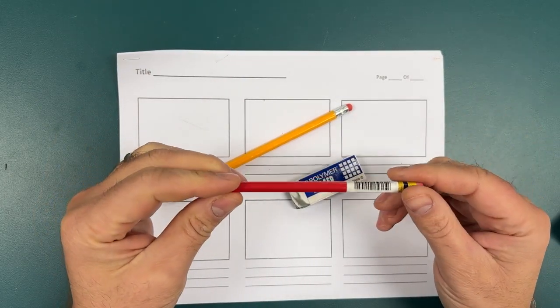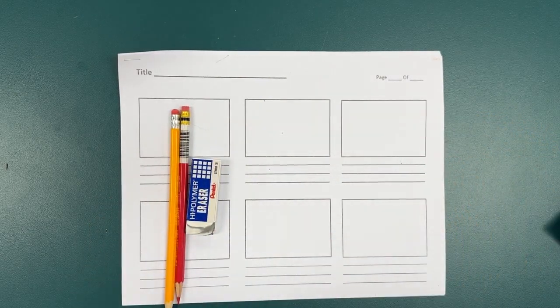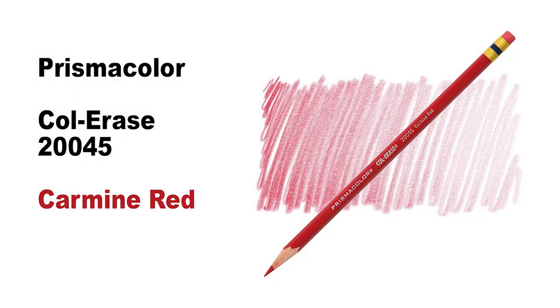Outside of the essentials, I really suggest getting some of these red colored pencils. They're called Col-Erase and I'm using a carmine red. The eraser is not so good, but the lead is fantastic.